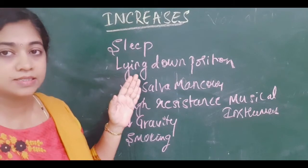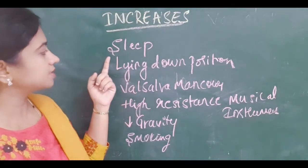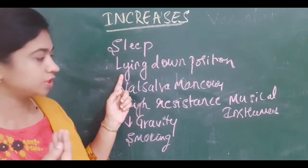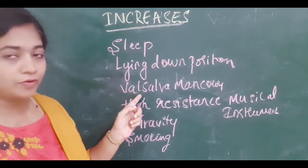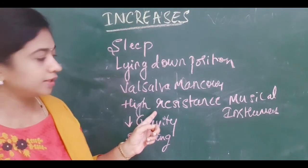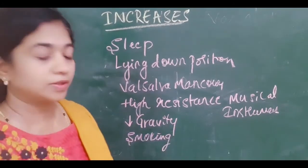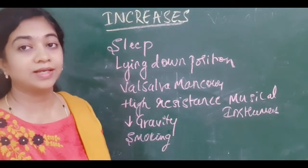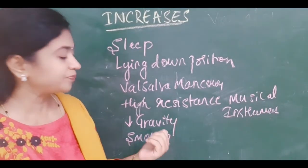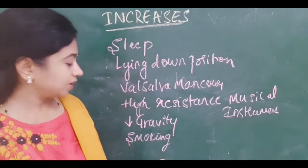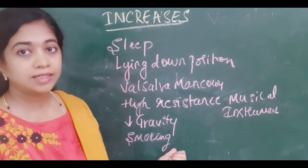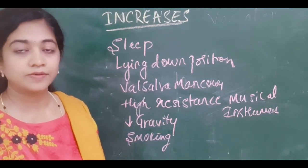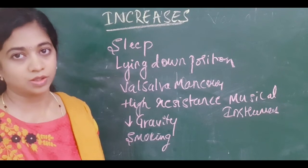There are factors which increase intraocular pressure: it increases during sleep, in the lying-down position — possibly because of fluid shift towards the head-end. Valsalva maneuvers, using high-resistance musical instruments, decreased gravity like the head-down position, and yoga postures like Shirsasana can all increase IOP. Smoking also transiently increases intraocular pressure. You should give importance to all these factors when taking history, otherwise you may miss the cause for raised intraocular pressure.